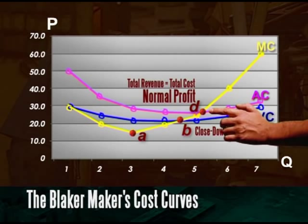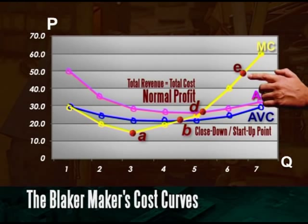Finally, at point E where the price is really high, Blakermacher earns an economic profit. Its total revenue is greater than its total costs.